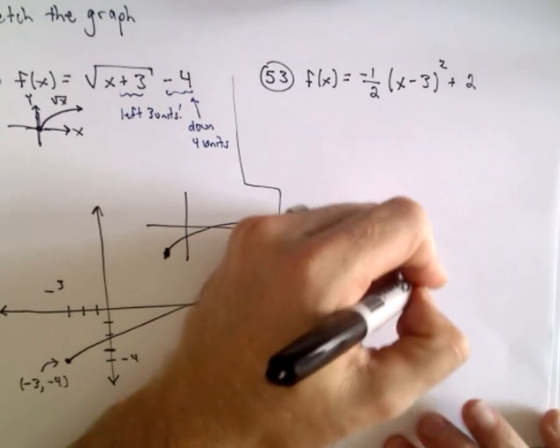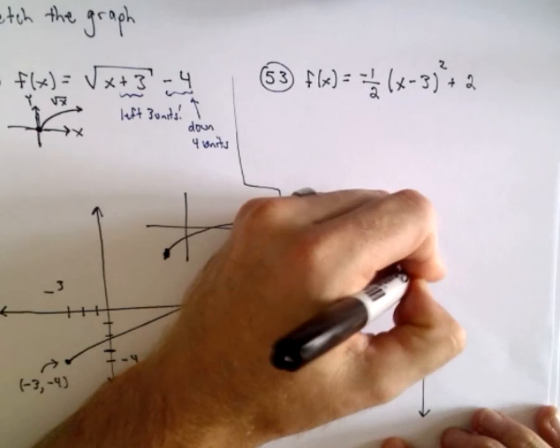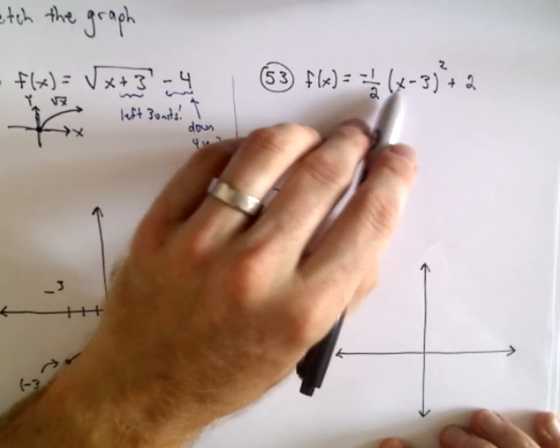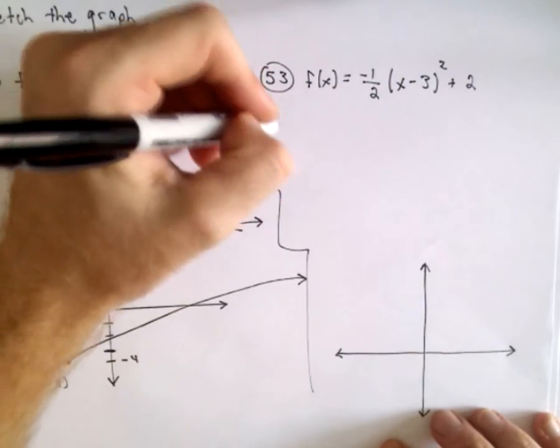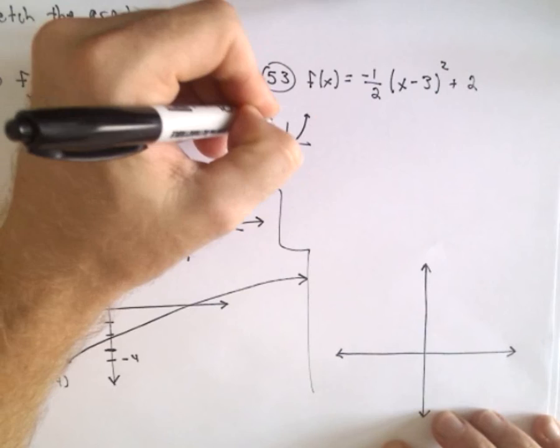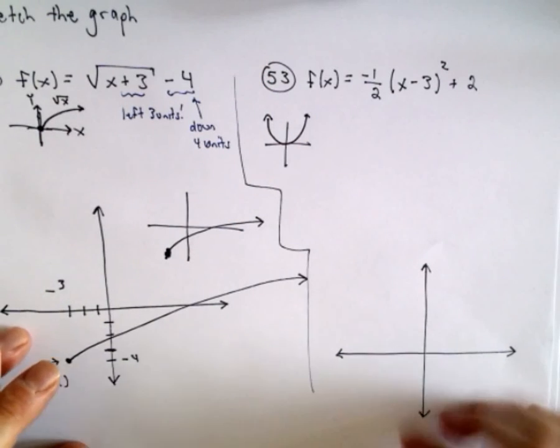Okay, so for 53 same idea. Okay, so the parent function here would be x squared, and recall that x squared is a parabola which opens upwards, just looks like a u. A couple things here.